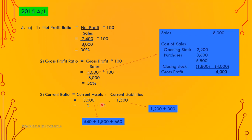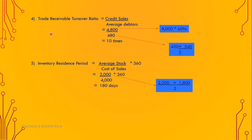Number three: current ratio equals current assets to current liabilities. Total current assets — trade receivables 540 plus inventory and cash — altogether 3,000. Current liabilities are trade payables and interest payable. The ratio is 2 to 1. Number four: trade receivable turnover ratio equals credit sales over average debtors. Out of total sales, 60% is on credit: 8,000 into 60% equals 4,800. Divided by average debtors (opening debtor 420 plus closing, divided by 2) — the answer is 10 times.